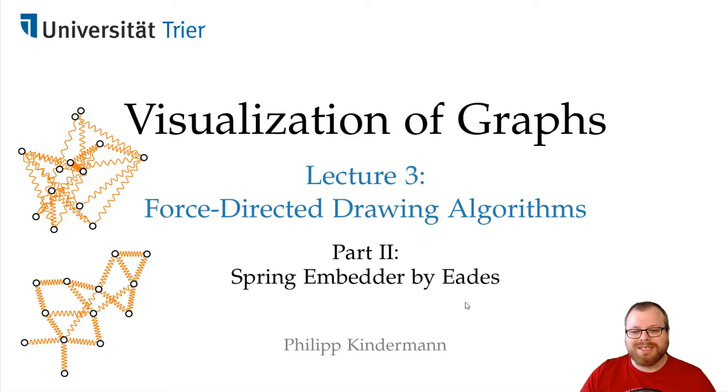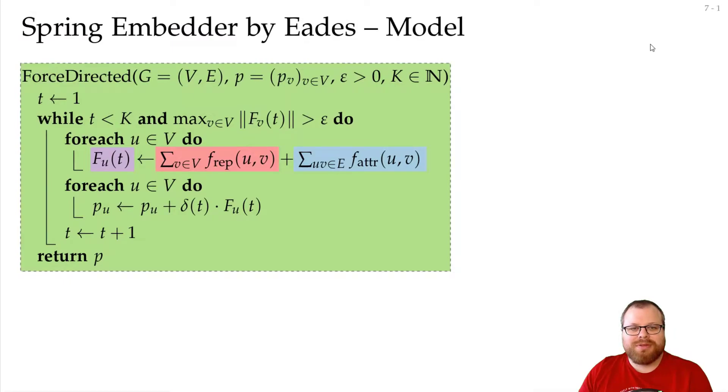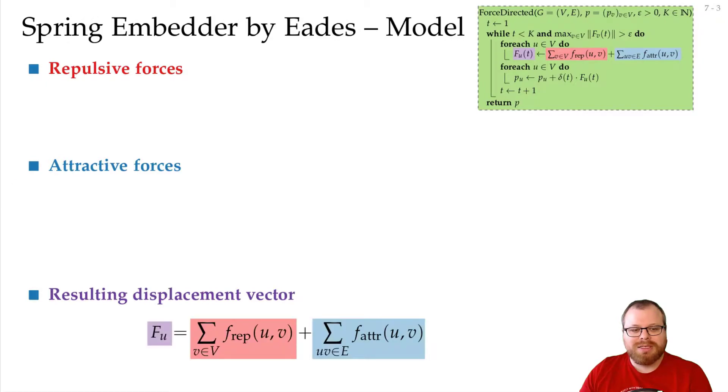In this part we want to have a look at the spring embedder as it was defined by Eades. Let's first go through the model by Eades. What we have to do is figure out what is the force for every vertex, and that depends on the repulsive and the attractive force. So a resulting displacement vector for every vertex is just the sum of these forces.